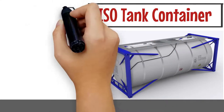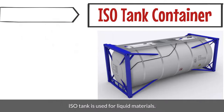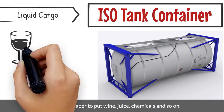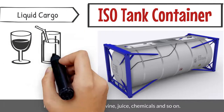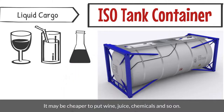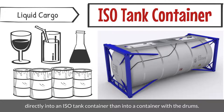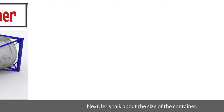Finally, the ISO tank container. An ISO tank is used for liquid materials. It may be cheaper to put wine, juice, chemicals, and so on directly into an ISO tank container than into a container with drums.